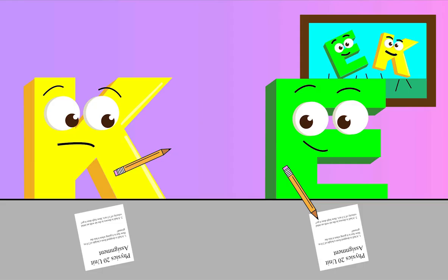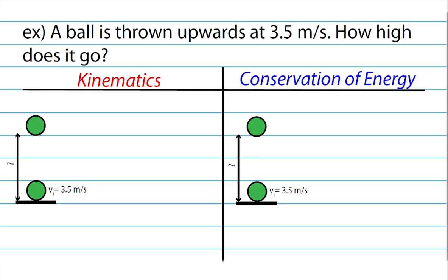Well, what about figuring out how high the ball goes in the air? Can I use conservation of energy for that too? Yeah! Now we have the opposite problem. We've got a velocity of 3.5 meters per second initially for the ball, and we want to know how high up it goes.